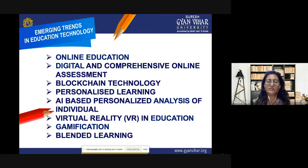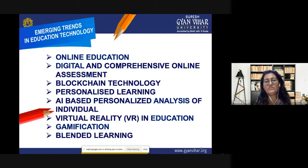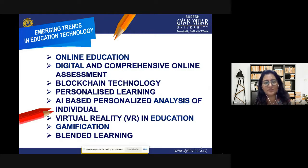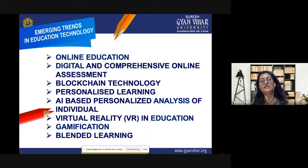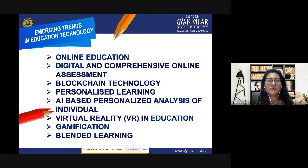With numerous benefits to offer, digital learning has become an important part of the education system. Schools and universities are trying to implement the latest in education technology to improve the teaching and learning process. A few emerging trends include online education, digital and comprehensive online assessment, blockchain technology, personalized learning, AI-based personalized analysis, virtual reality, gamification, blended learning, and MOOCs.